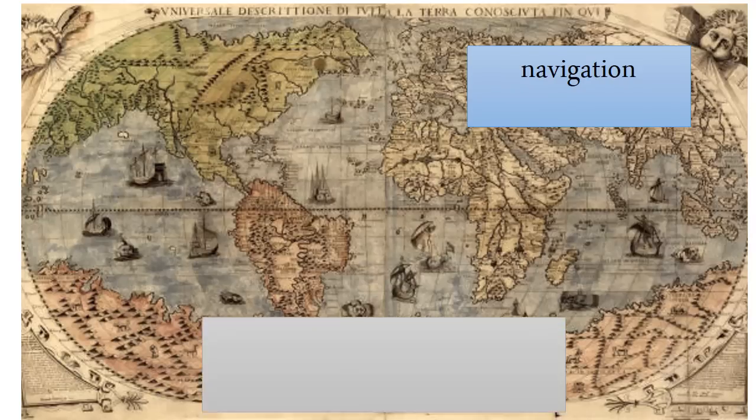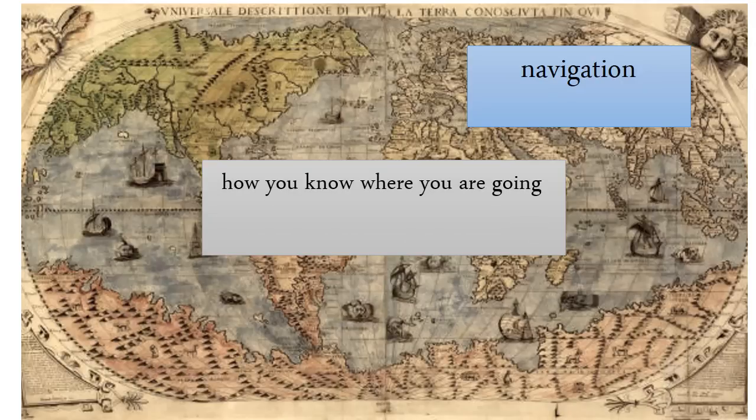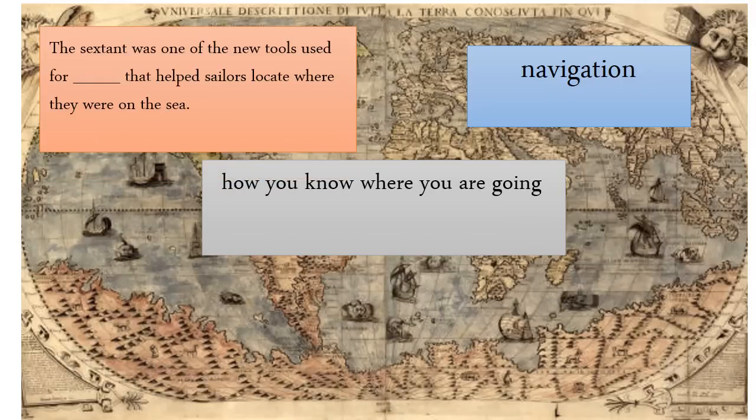Navigation. The word navigation means how you know where you are going. An example sentence could be, the sextant was one of the new tools used for navigation that helps sailors locate where they were on the sea.